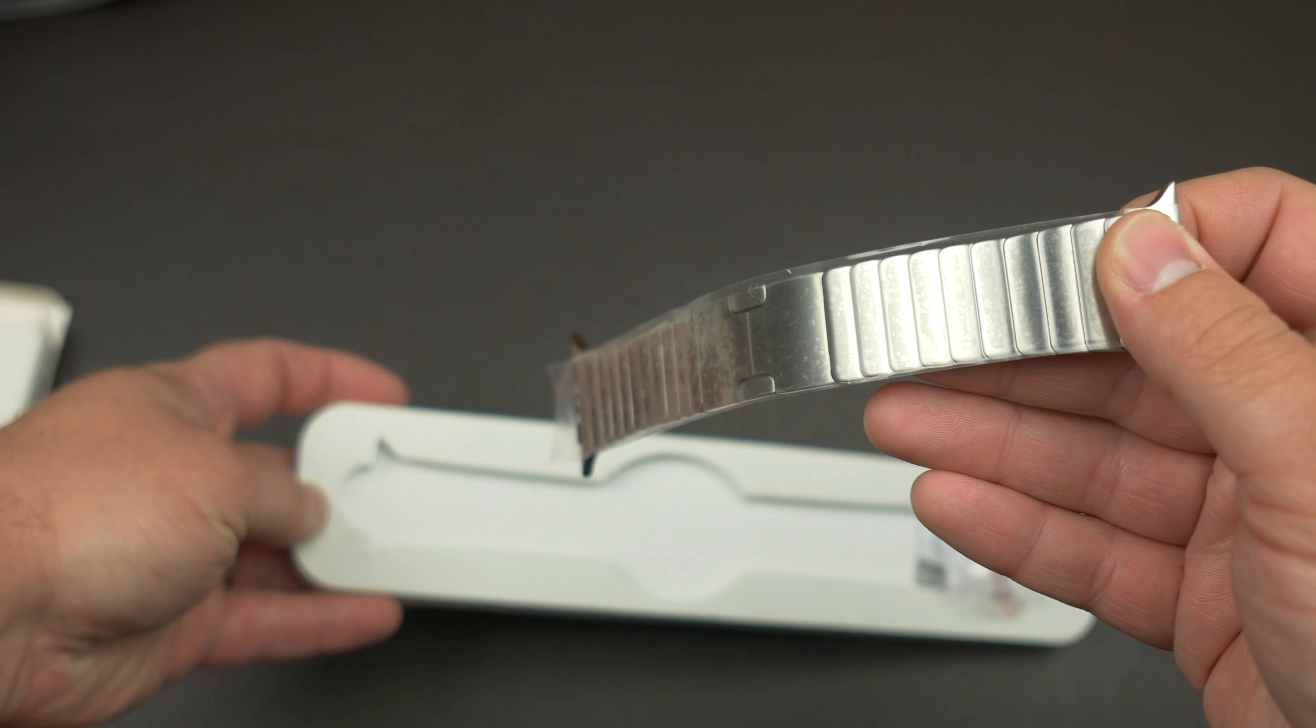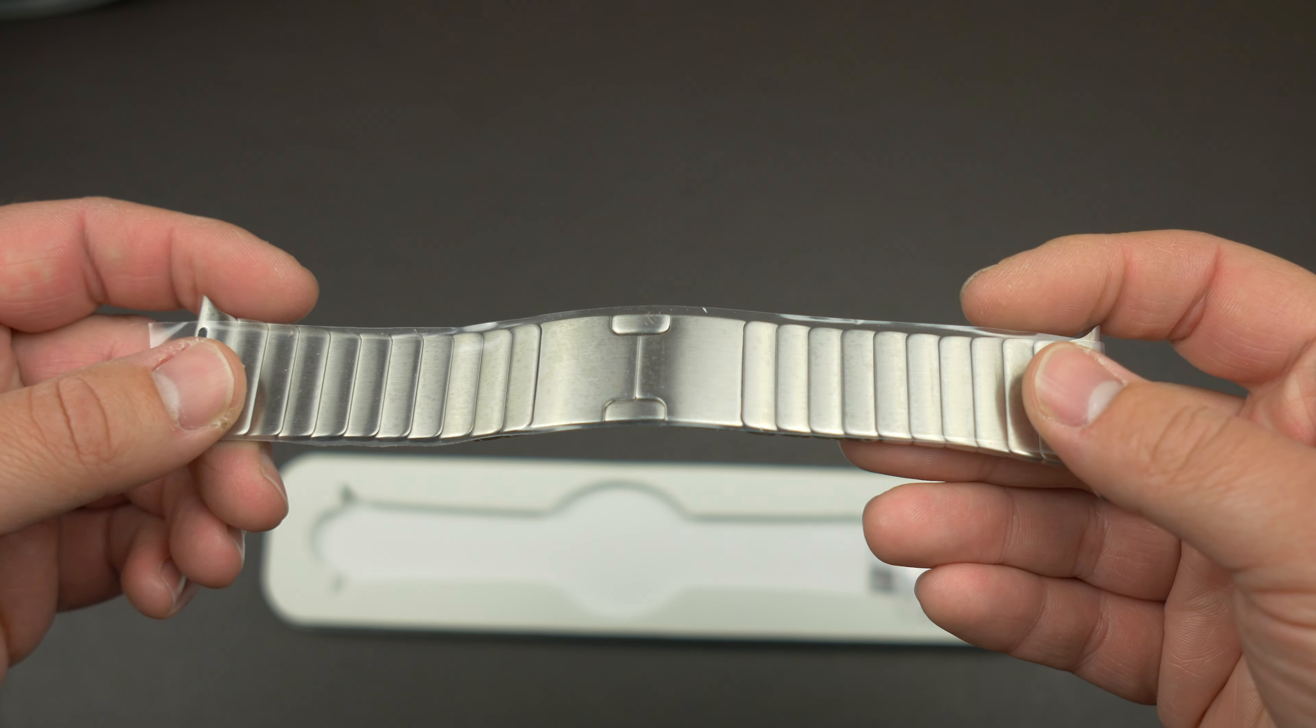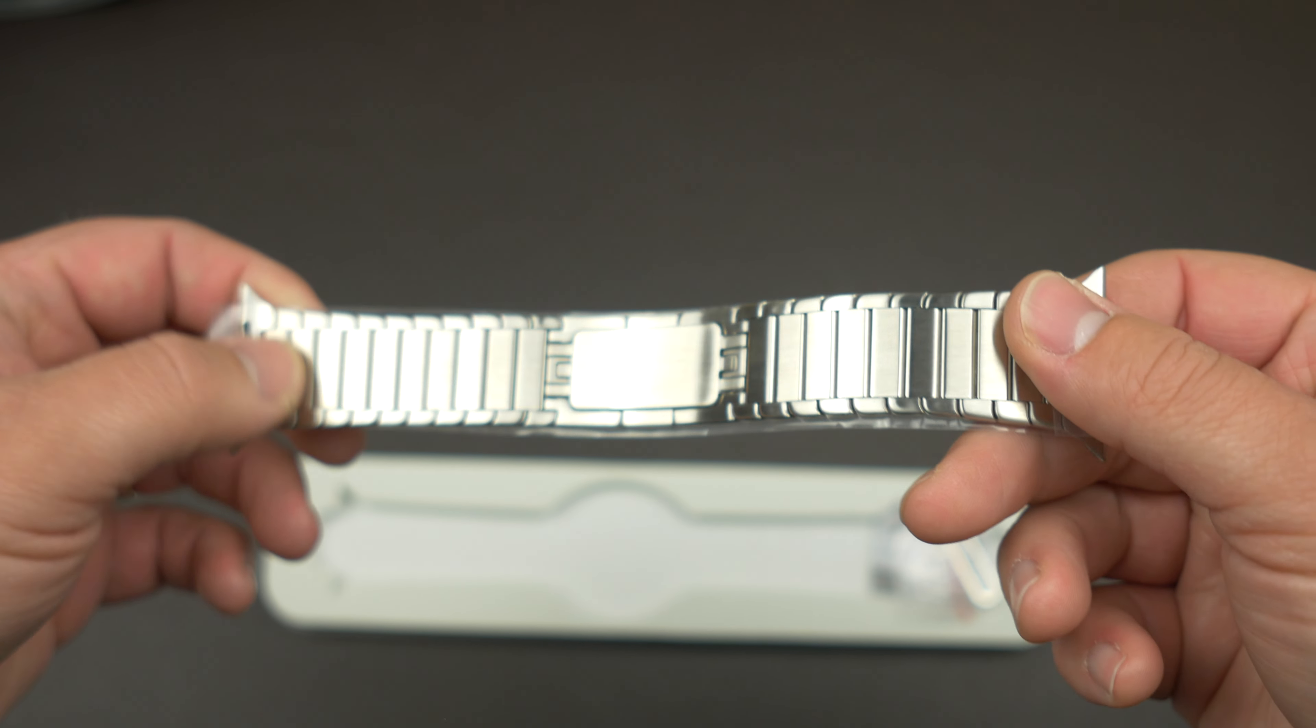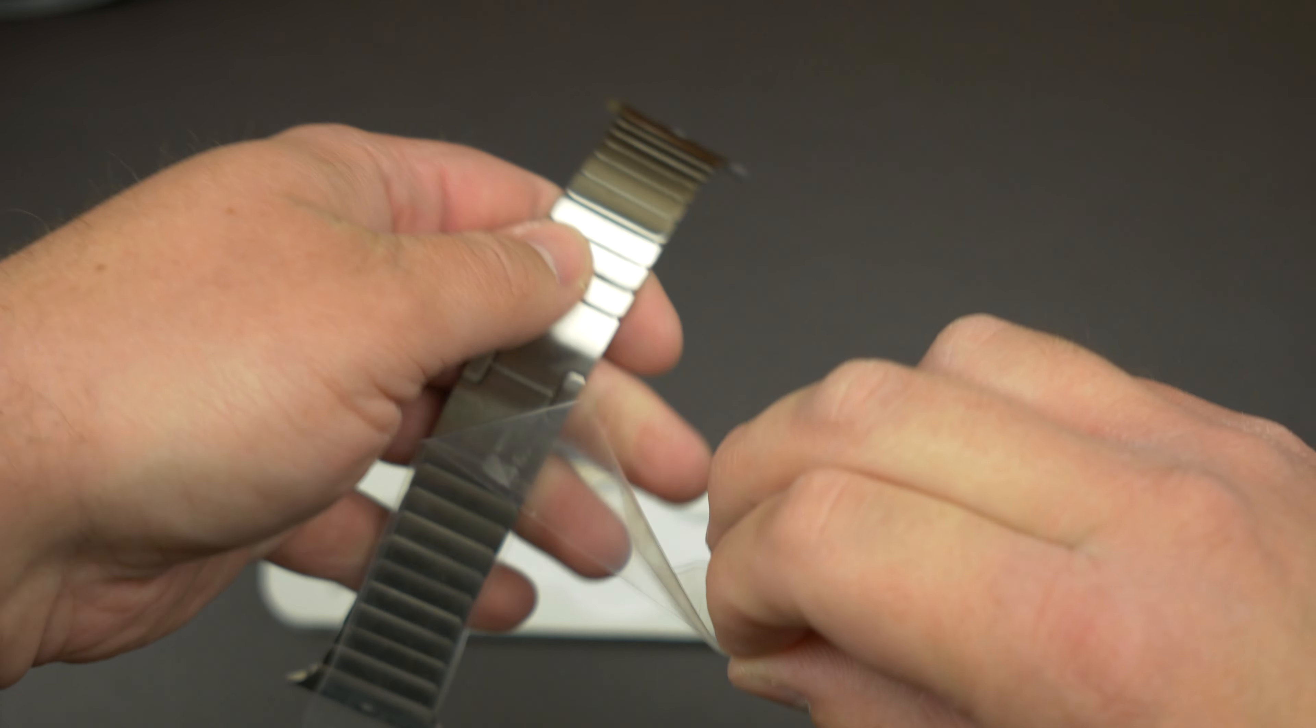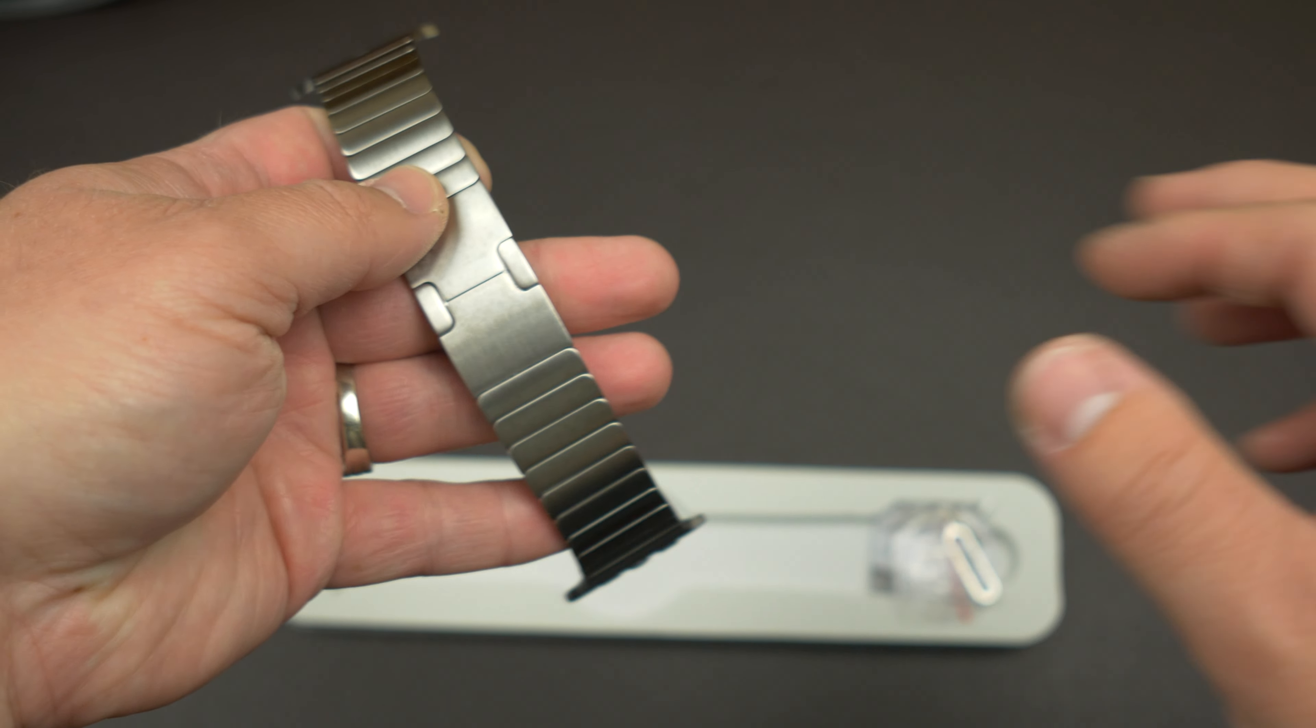This band comes in a cardboard box with a foam insert. Opening the package we are greeted with the bracelet itself, a bag with two extra spring bar pins, a SIM card removal tool, and some instructions for removing the links.